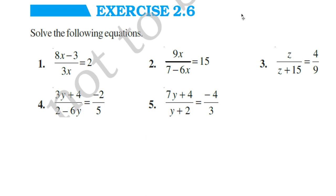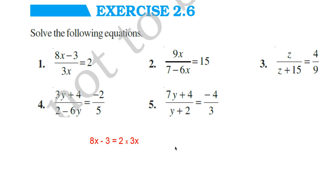There are 5 questions. Look at the first question: (8x − 3) / 3x = 2. Here there is no denominator on the right side, so you multiply 3x into 2 only. We get 8x − 3 = 2 × 3x, that is 8x − 3 = 6x. Now take x on one side and the number to the other side and solve yourself.